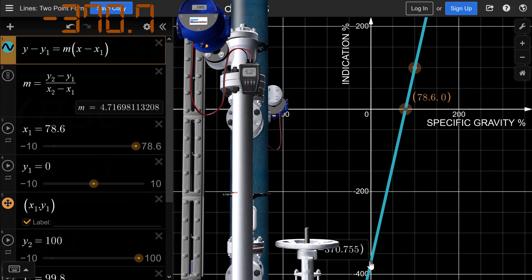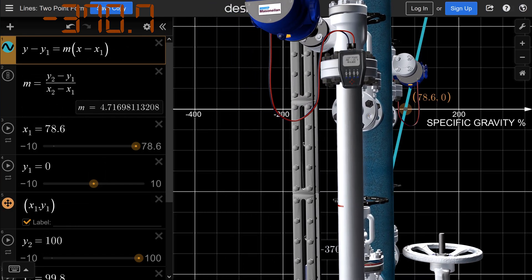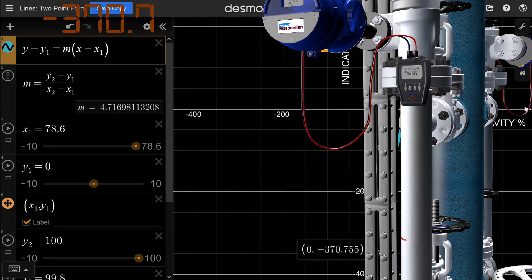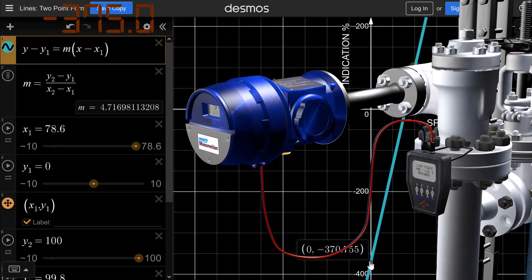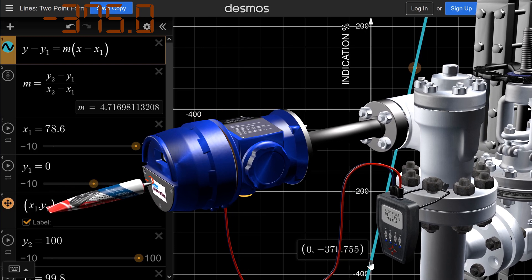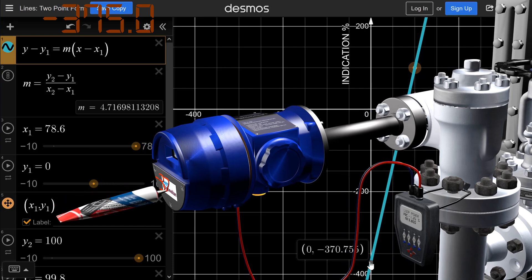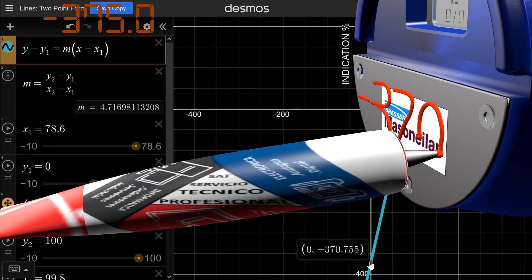The display alters its value around minus 370.7%, which is the correct number for the specific calibration. The intersection point on the y-axis is also minus 370.7. After we found out the value that should be indicated with the Desmos graphing calculator, we compare with the displayed indication. The transmitter responds properly.